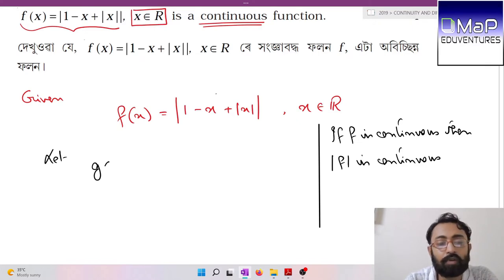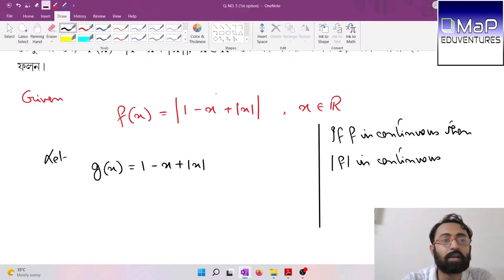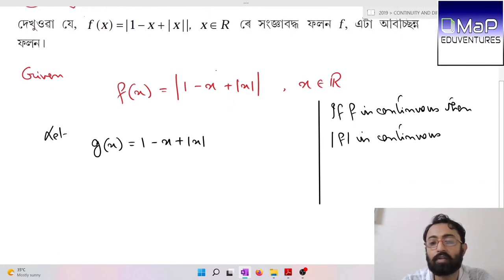Let g(x) = 1 - x + |x|. Then f(x) is nothing but |g(x)| because g(x) = 1 - x + |x|. Now 1 is a constant function, which is continuous. x is the identity function, which is continuous.